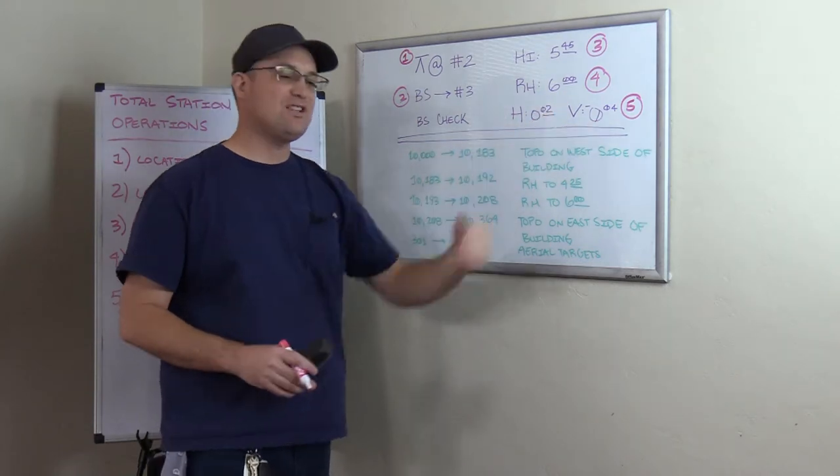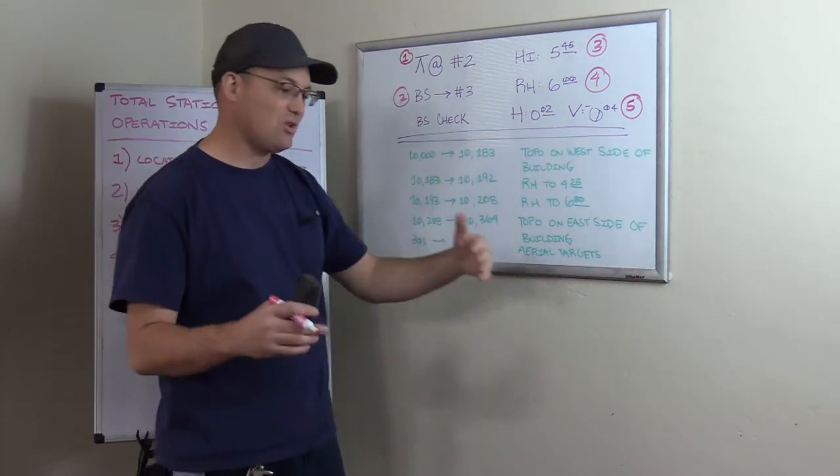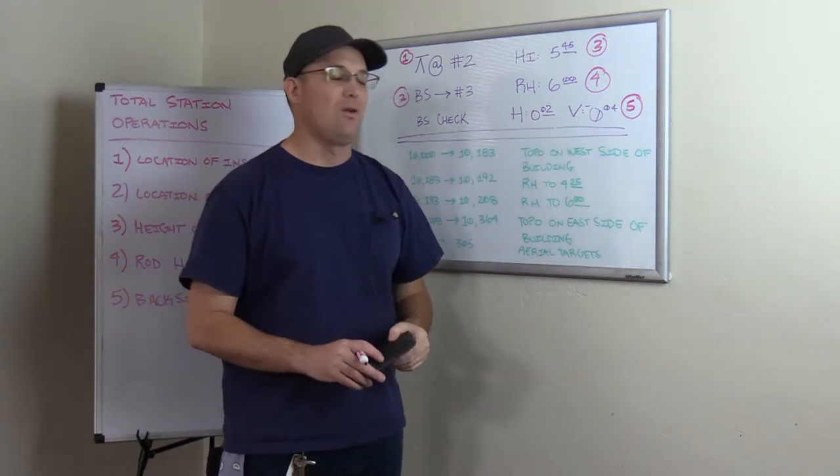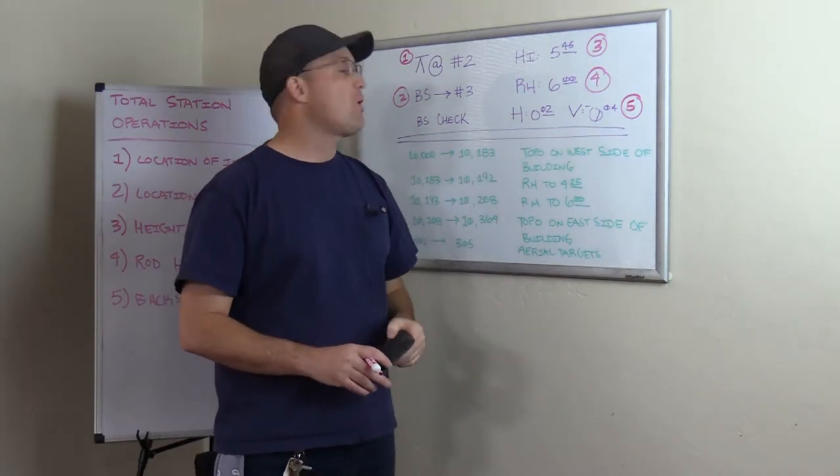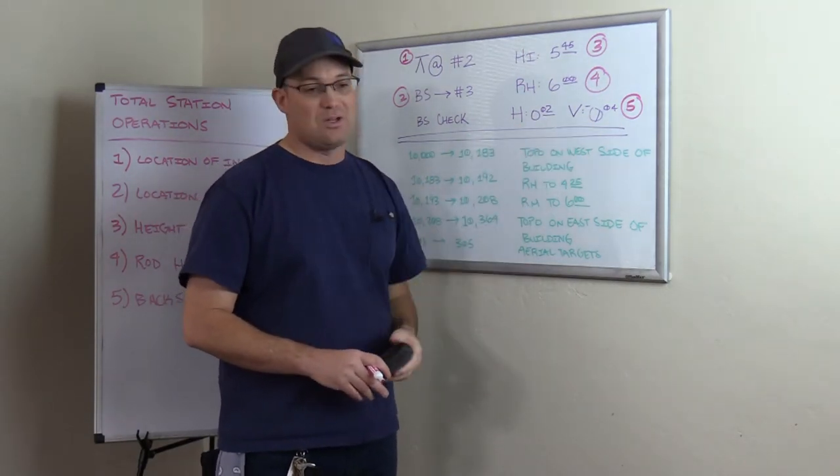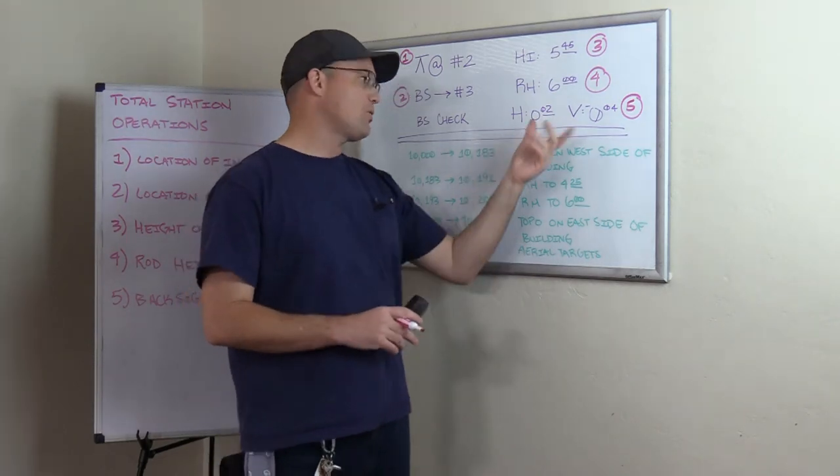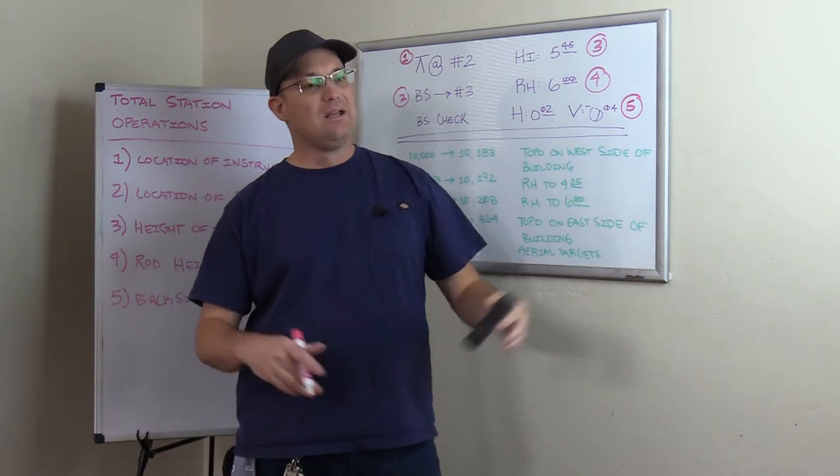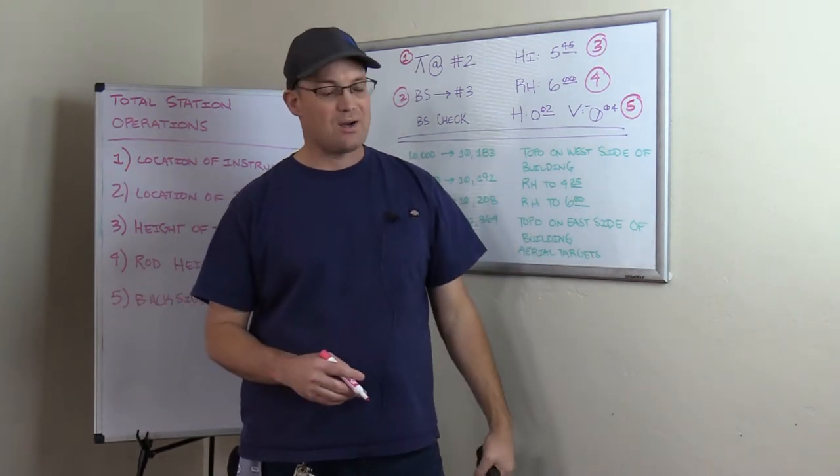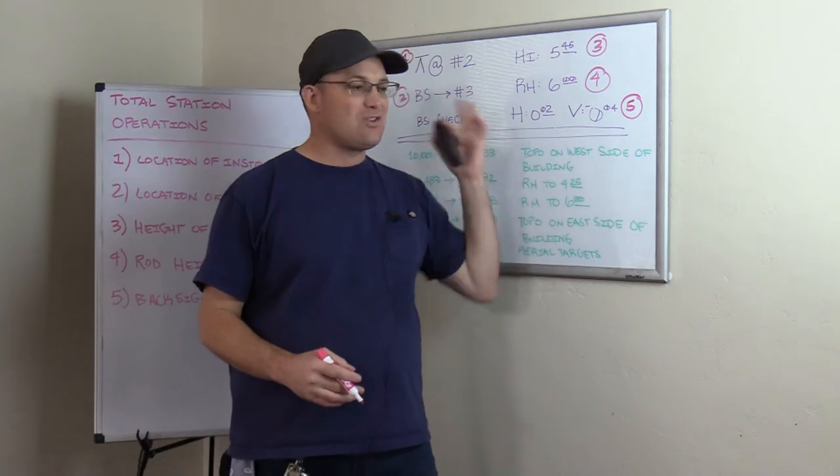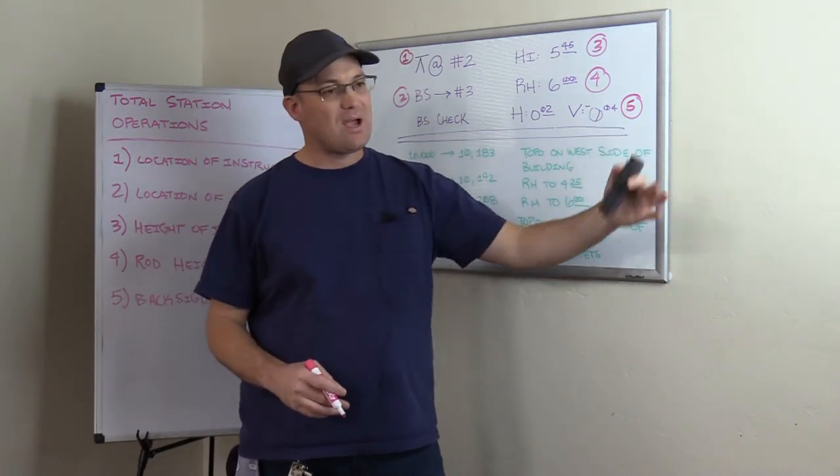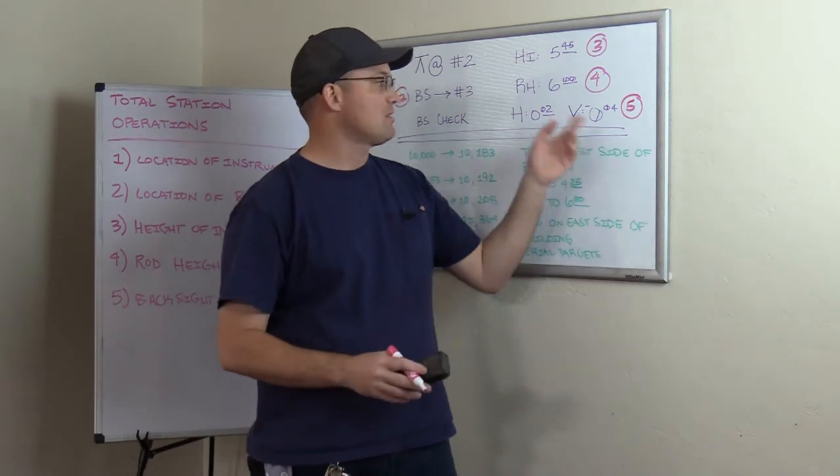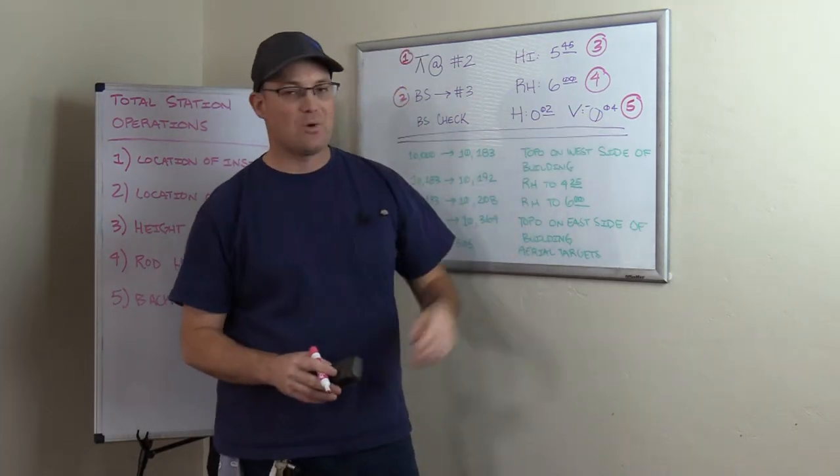Now the backside check is stored in the total station, calculated directly by the total station or the data collector. So why do we make them write that down? We make them write that down because we want them to physically have to look at their backside check. Because what happens if you don't make crews write down their backside check, they'll get a bad backside check. They won't look at it because they're in a hurry or they're trying to work hard and get done before dark or whatever. And they just, they get a bad backside check. They don't notice because they don't have to write it down. And then they waste a bunch of time taking side shots that are no good because they got a bad backside check. So that's why we make them write that down.